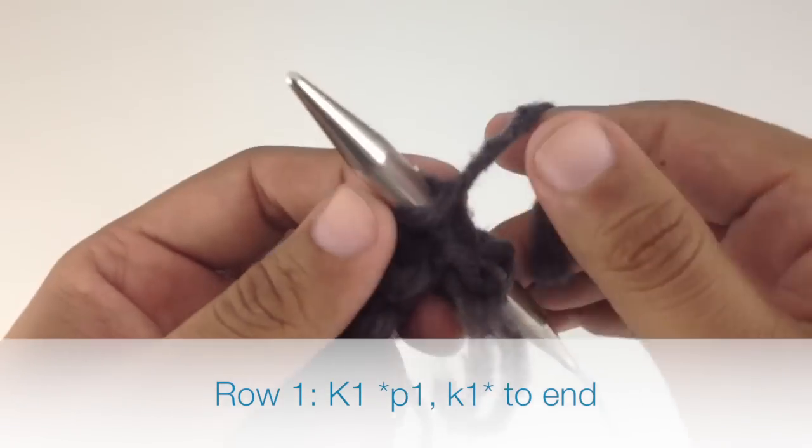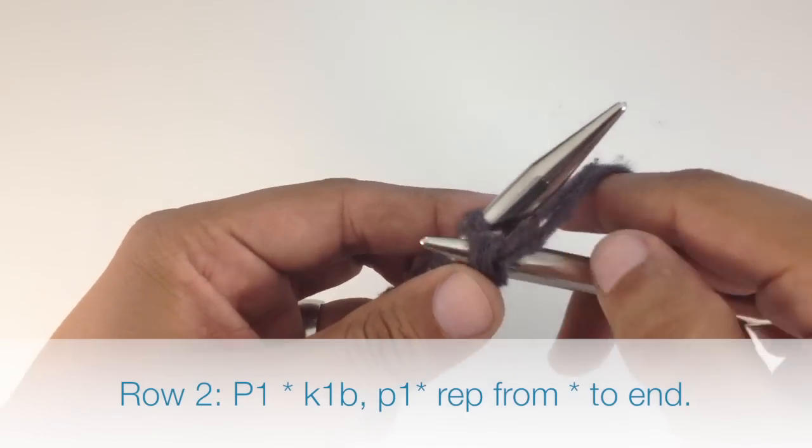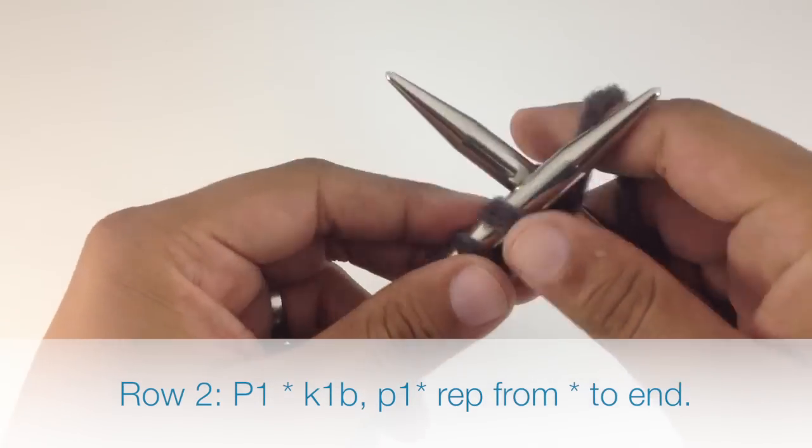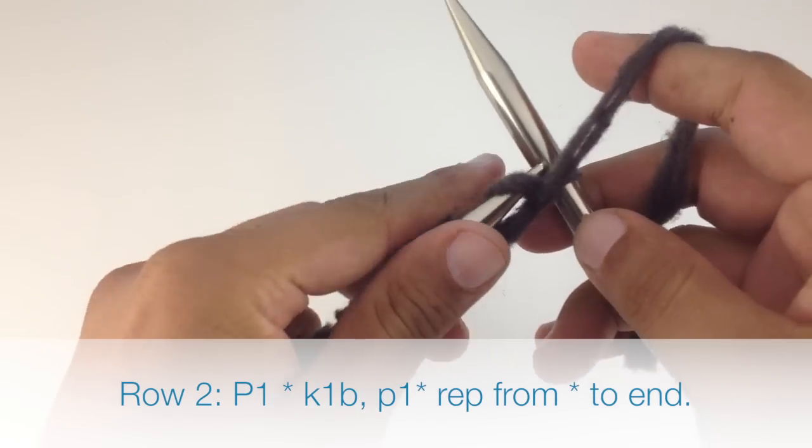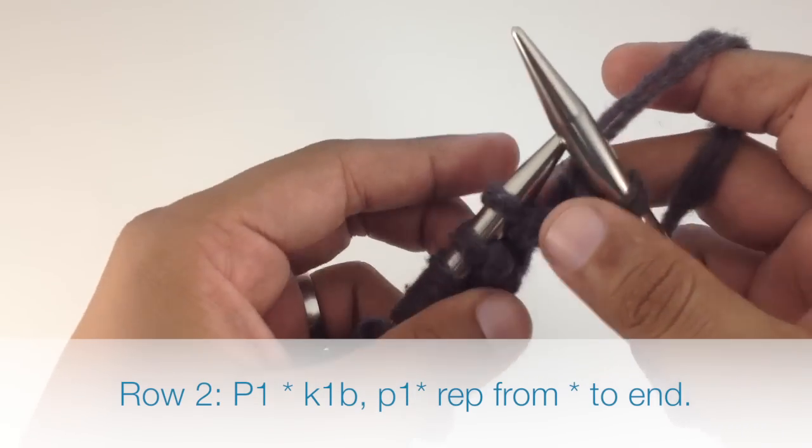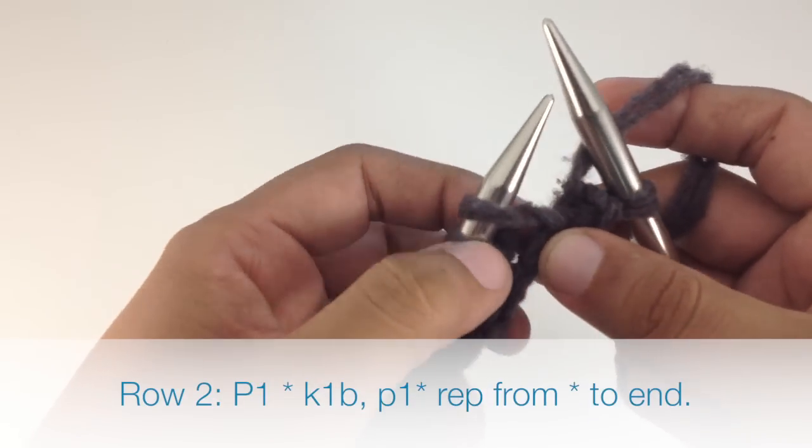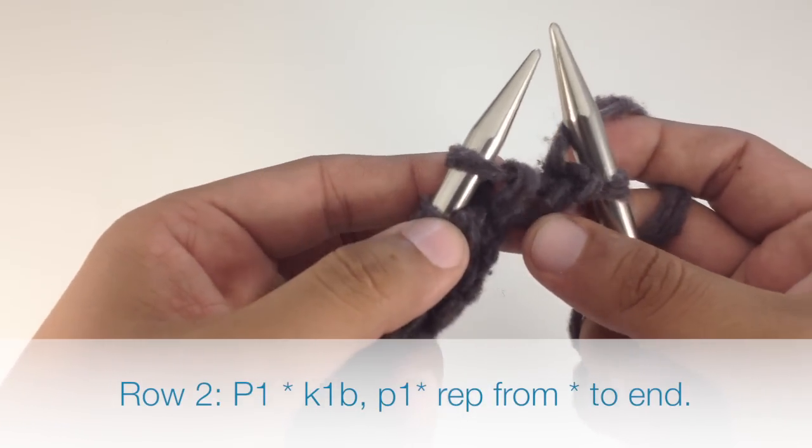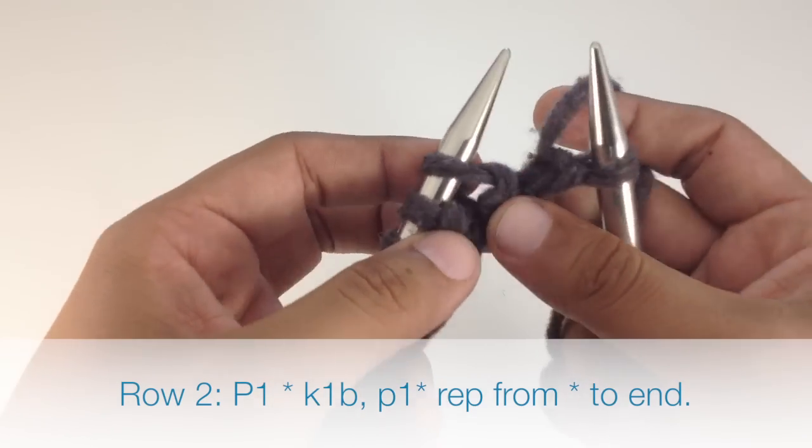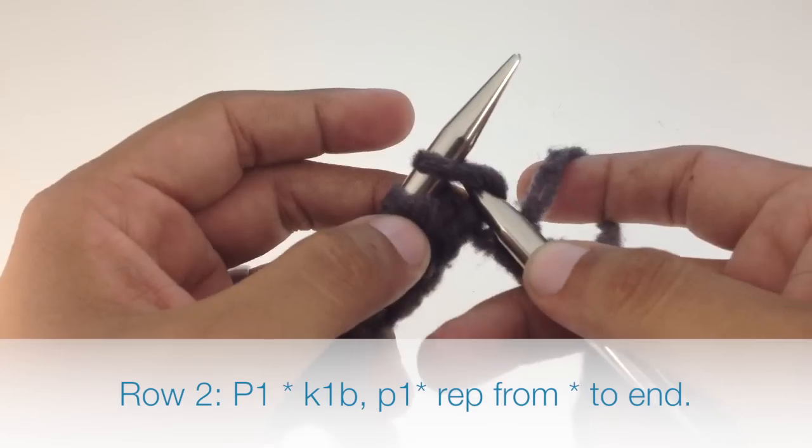Row two: Begin by purling one, then start the repeat by knitting one below. You're going to insert your needle into the stitch right below the stitch that's on your needle. You can see the hole right there. Insert your needle into that stitch and knit that stitch as normal.